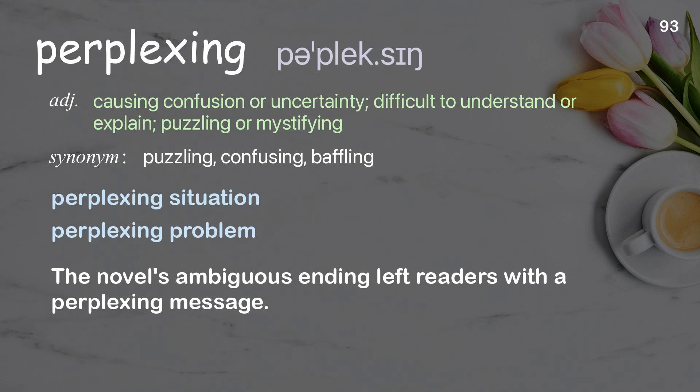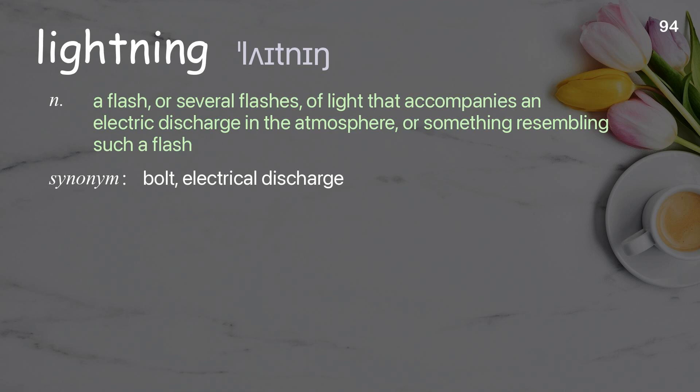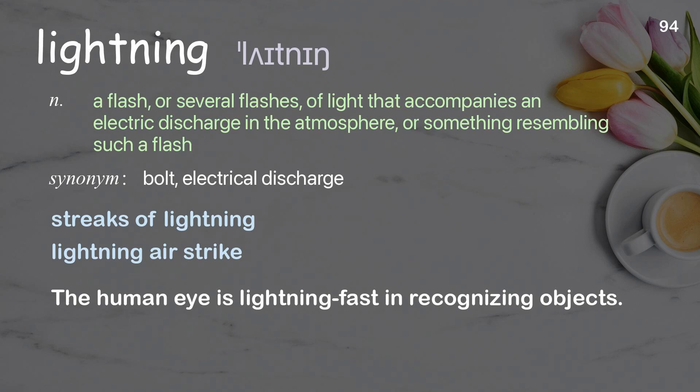Lightning: a flash or several flashes of light that accompany an electric discharge in the atmosphere, or something resembling such a flash. Examples: streaks of lightning, lightning airstrike. The human eye is lightning fast in recognizing objects.